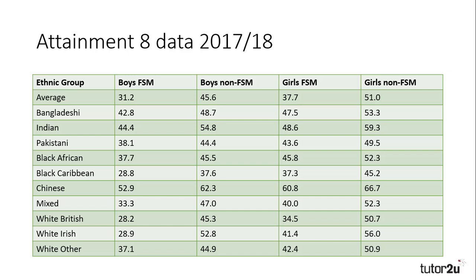Another trend that is relatively easy to spot is that girls achieve higher than boys in all ethnic groups and all social classes. In fact, most girls on free school meals are above average with the exception of white British and black Caribbean, which indicates that girls may not feel the impact of material factors as much as boys. It's worth noting that as white British is the largest group, their results will have a greater impact on the average.